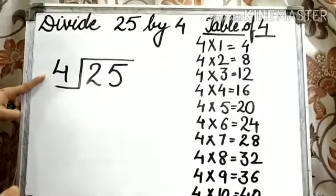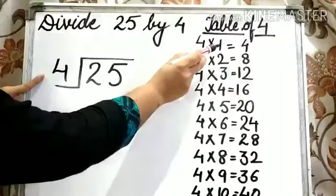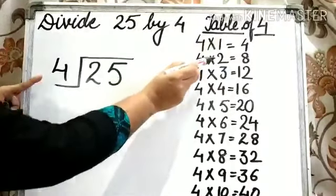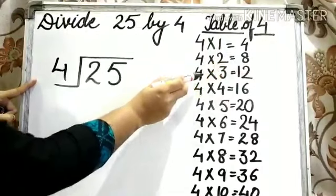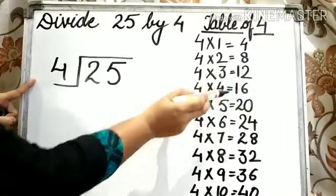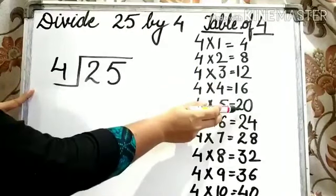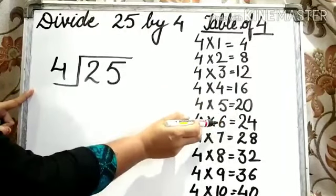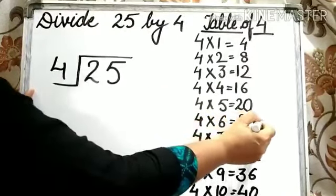Let's count table of 4. 4 ones are 4, 4 twos are 8, 4 threes are 12, 4 fours are 16, 4 fives are 20, 4 sixes are 24, and 4 sevens are 28.